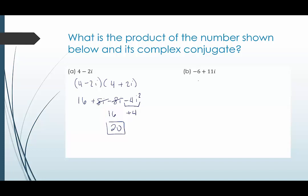In our next example, we have negative six plus 11i. The complex conjugate of that would be negative six minus 11i. When we multiply,